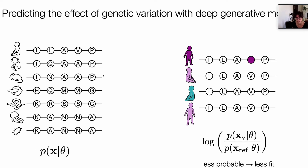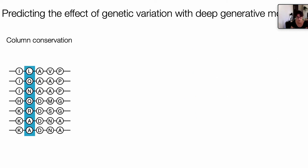A generative model is a model that describes the distribution of sequences. We'll have a model where x is just the sequence data and theta are the parameter models. Once we have such a model, we can inquire how likely a new sequence — like a human sequence with a variant we've never seen — is under the model. The idea is that the least probable a sequence is, the less fit it is and the more likely it is to be associated with disease. We can build a pathogenicity score built upon the probabilities of seeing the variant sequence over the probability of seeing the reference sequence — very similar to what Creston was talking about this morning.